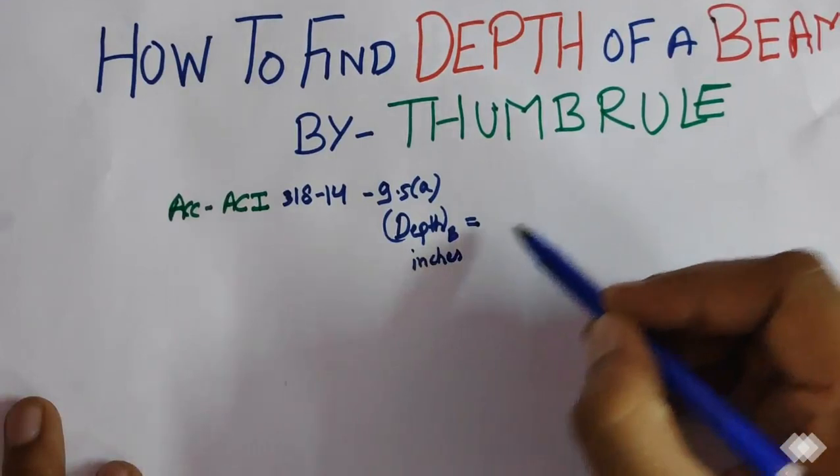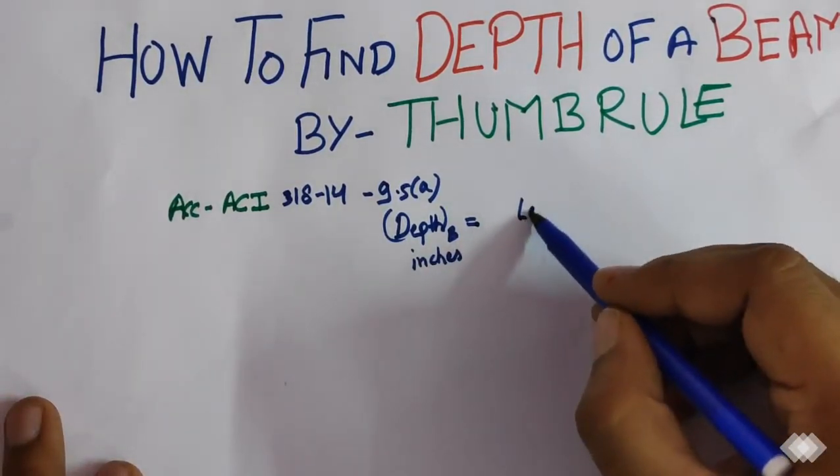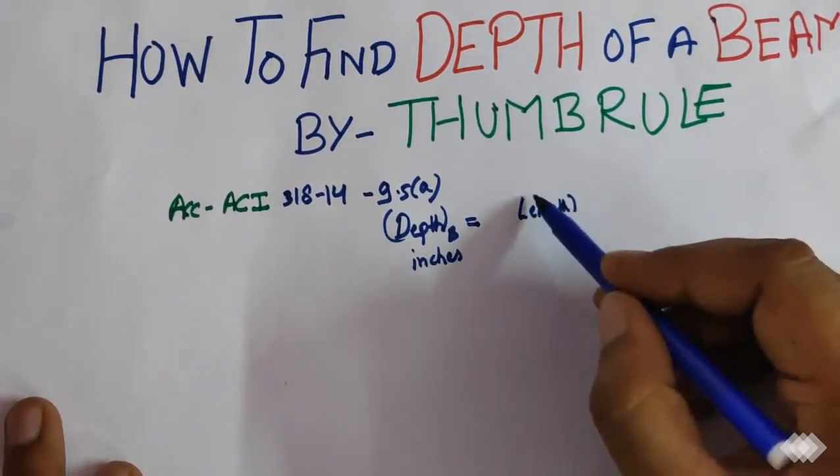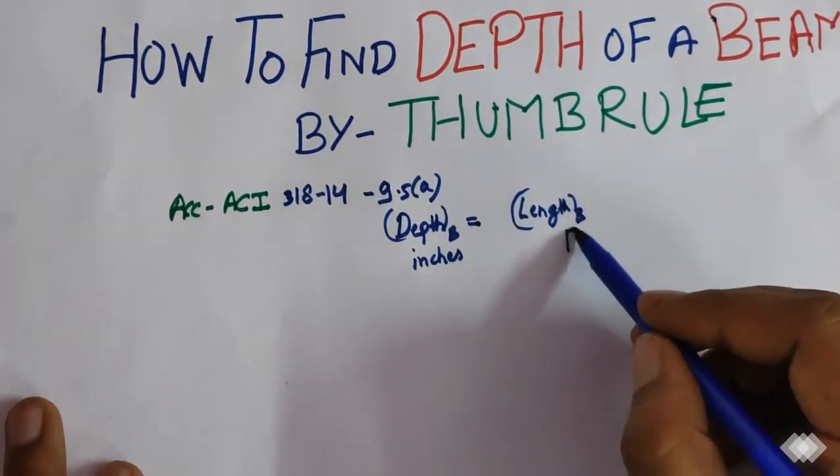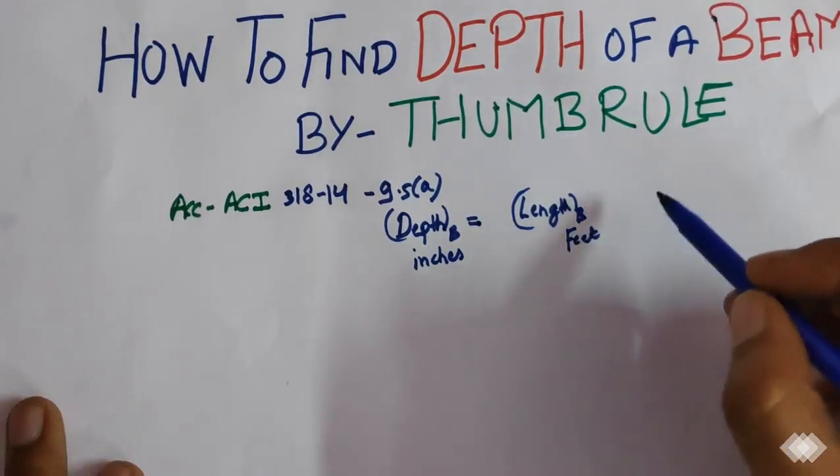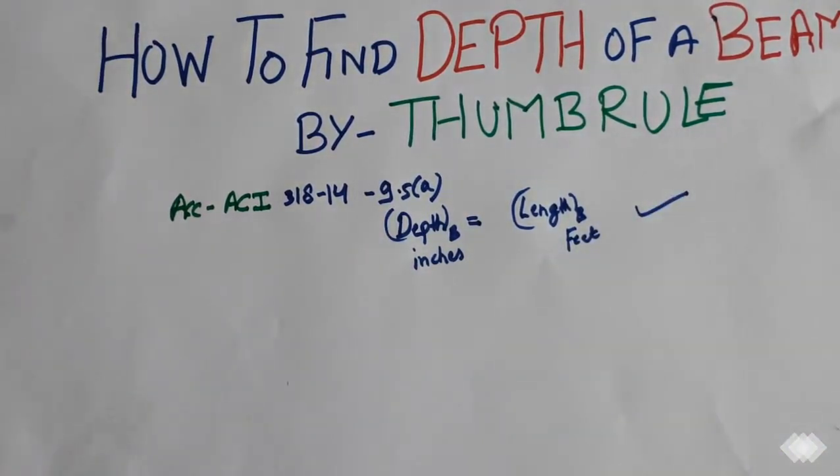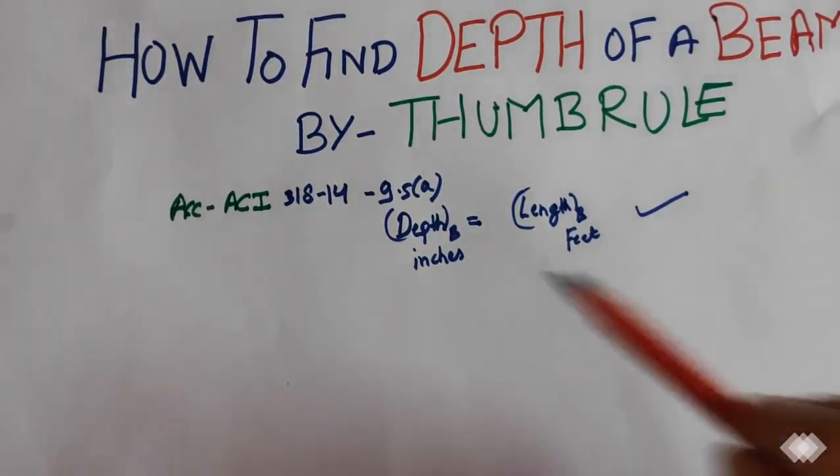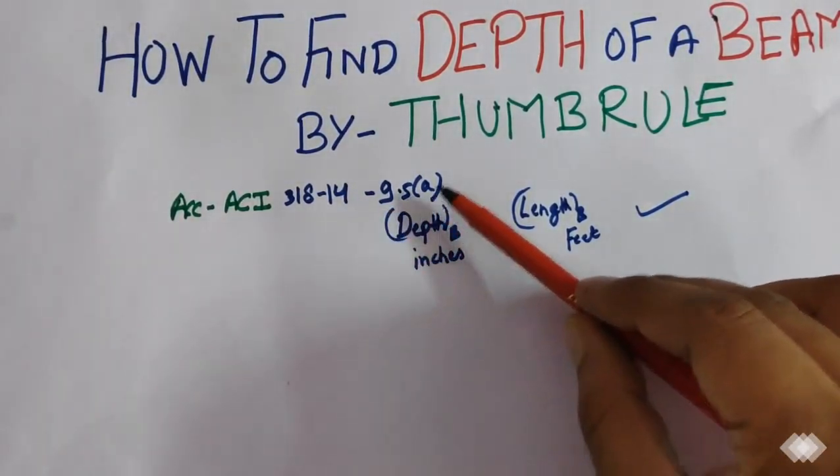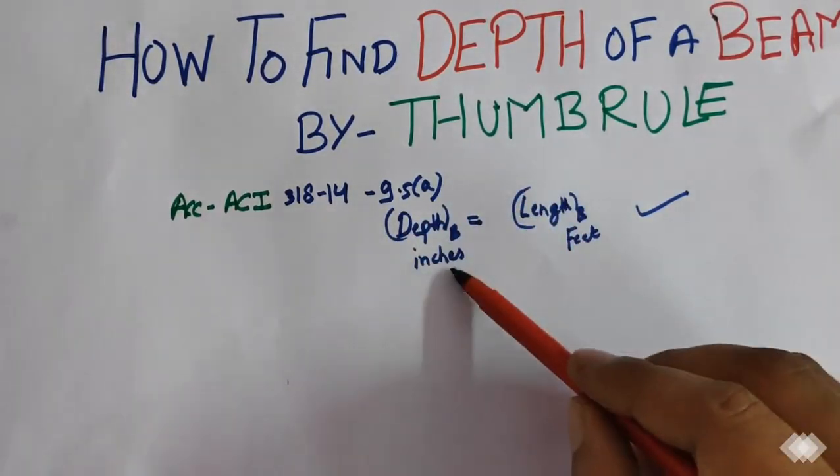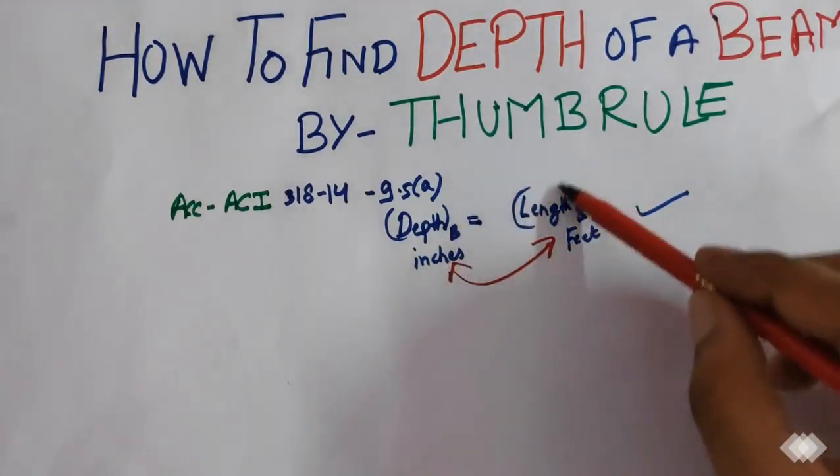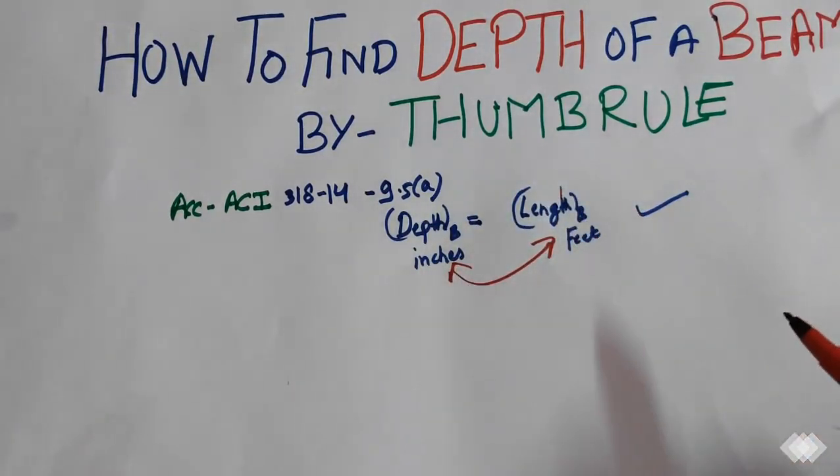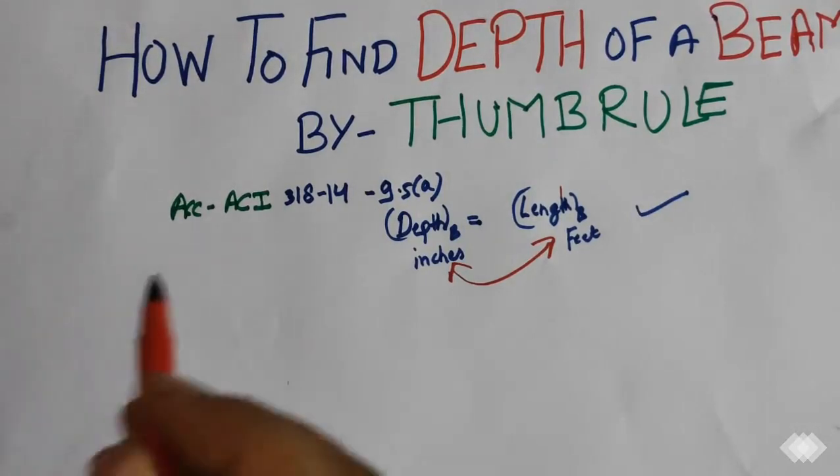...is equals to the length of beam in feet. So according to American Code of Institute 318-14-9.5(a), depth of beam in inches is equals to the length of beam in feet.